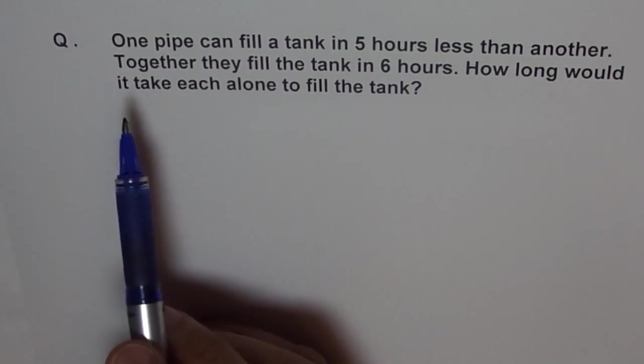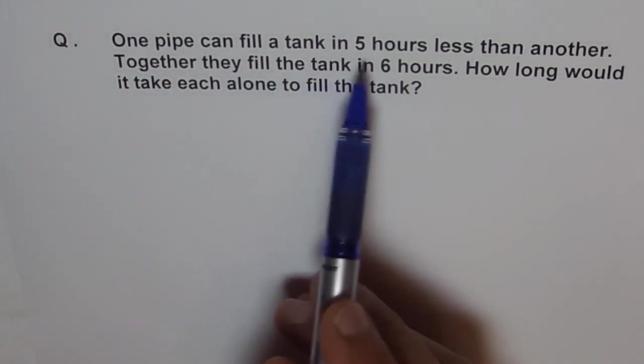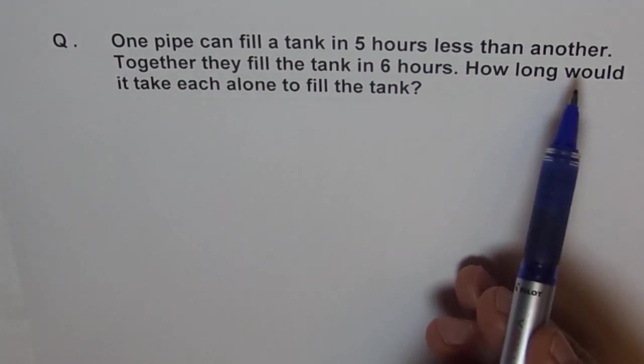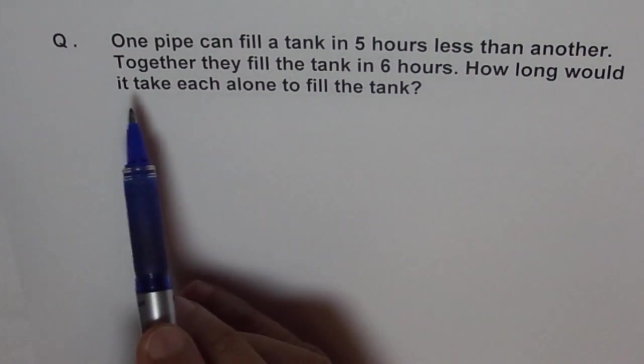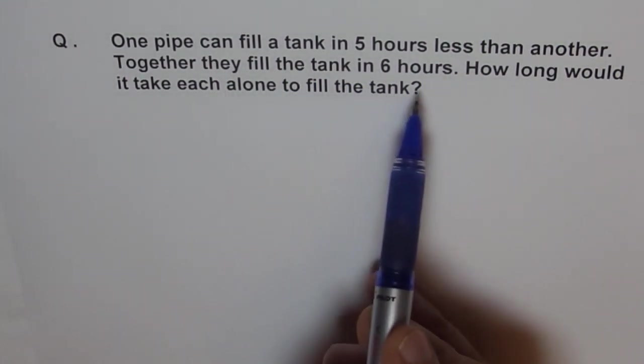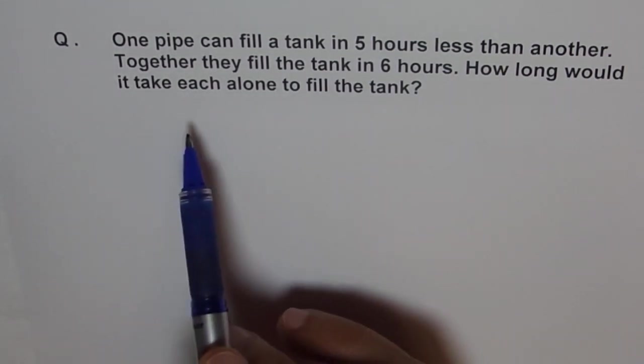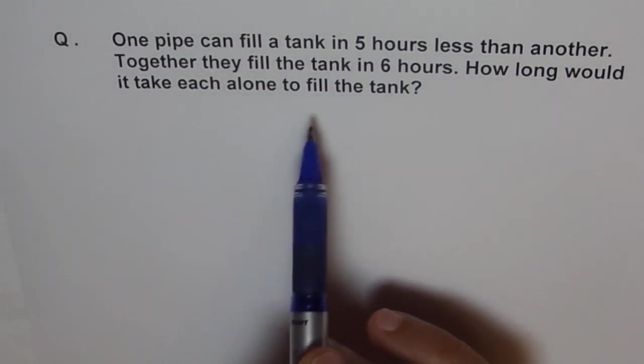Here it is: one pipe can fill a tank in five hours less than another. So there are two pipes. Together they fill the tank in six hours. How long would it take each alone to fill the tank?